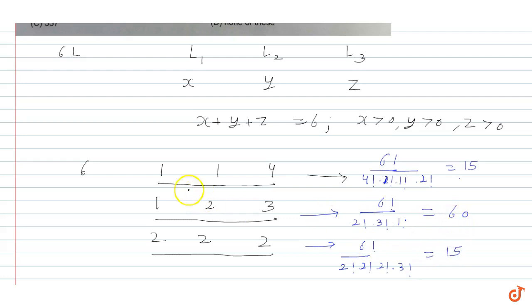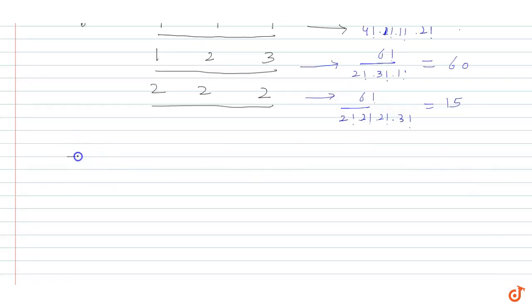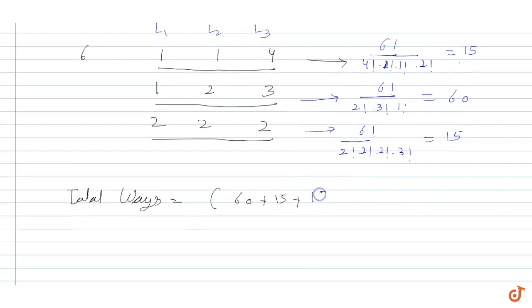So we can clearly see that letterbox one, letterbox two, and letterbox three - these three are different. So we can arrange them in three factorial ways. So total ways equals how many ways we can divide, multiplied by three factorial. Sixty plus fifteen, again fifteen, into three factorial.